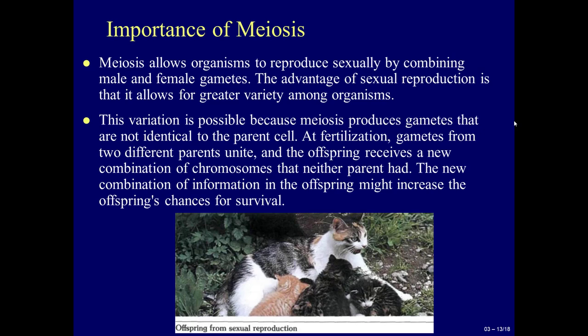Importance of meiosis: meiosis allows organisms to reproduce sexually by combining male and female gametes. The advantage of sexual reproduction is that it allows for greater variety among organisms. This variation is possible because meiosis produces gametes that are not identical to the parent cell. At fertilization, gametes from two different parents unite, and the offspring receives a new combination of chromosomes that neither parent had. The new combination of information might increase the offspring's chances for survival.